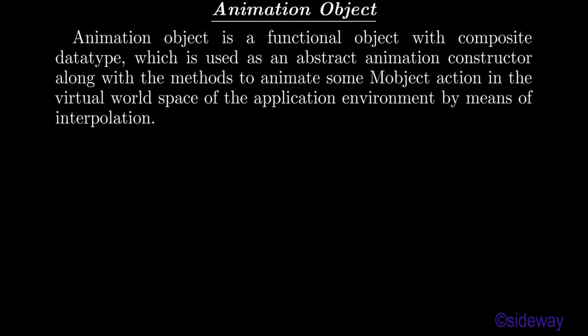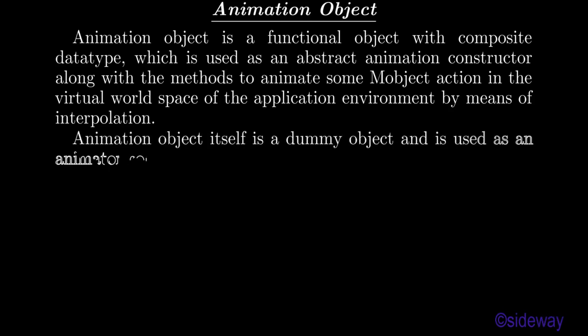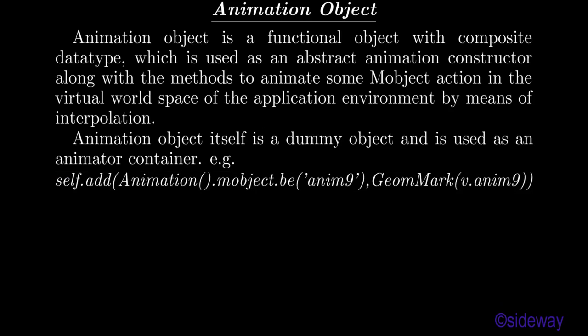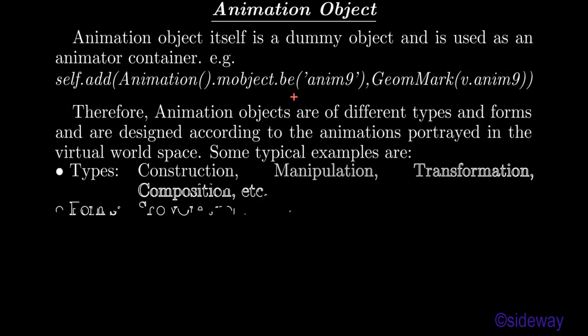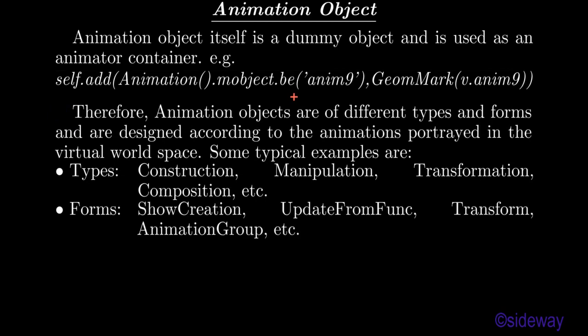A BezierCurve is another Mobject form. For example: self.add(.b.bcrv8, geometry_mark.b.bcrv8). An animation object is a functional object with composite data type, used as an abstract animation constructor along with methods to animate some object action in the virtual world space by means of interpolation. Animation object itself is a dummy object used as an animator container. Animation objects are of different types and forms, designed according to the animations portrayed in the virtual world space.